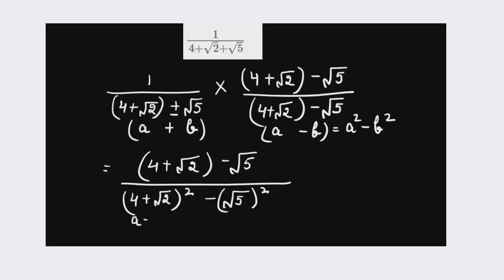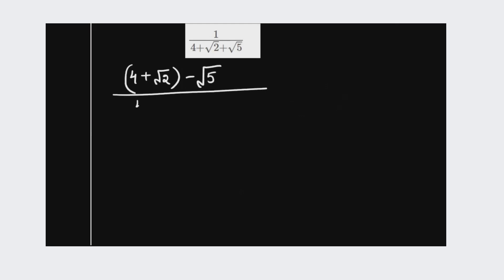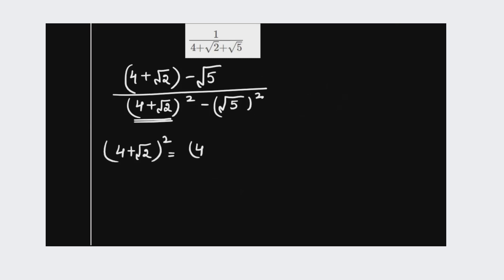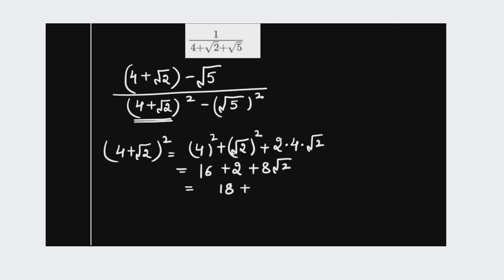Now we will use the formula (a + b)² = a² + b² + 2ab. So (4 + root 2)² equals 4² + (root 2)² + 2 × 4 × root 2, which equals 16 plus 2 plus 8 root 2, which equals 18 plus 8 root 2.